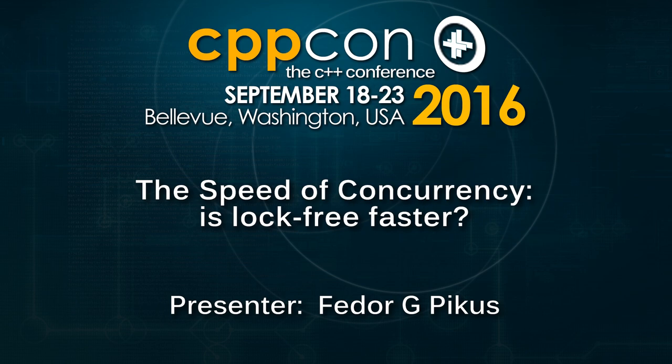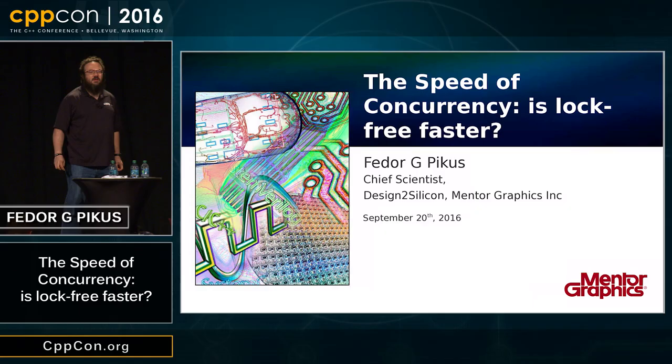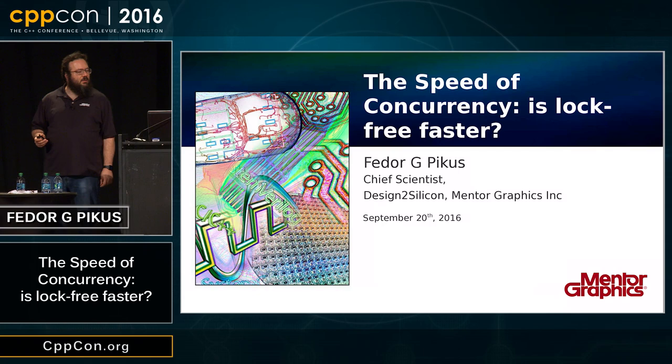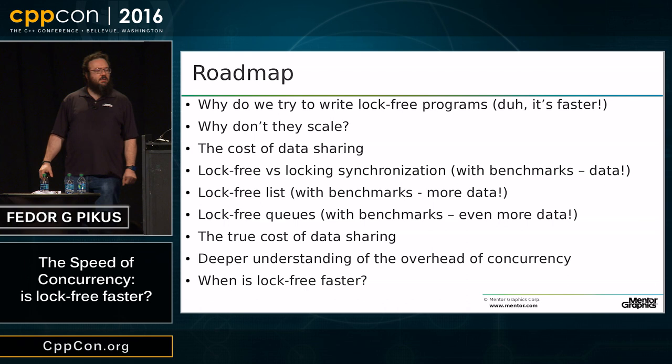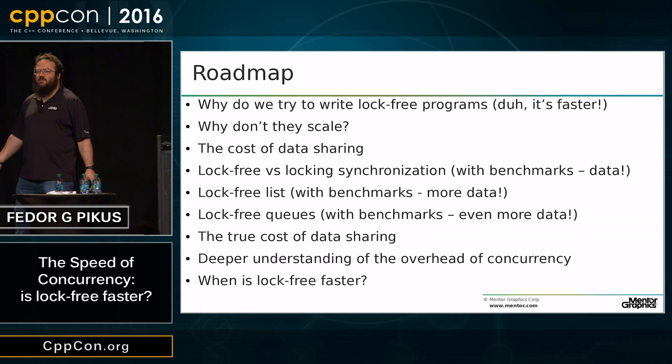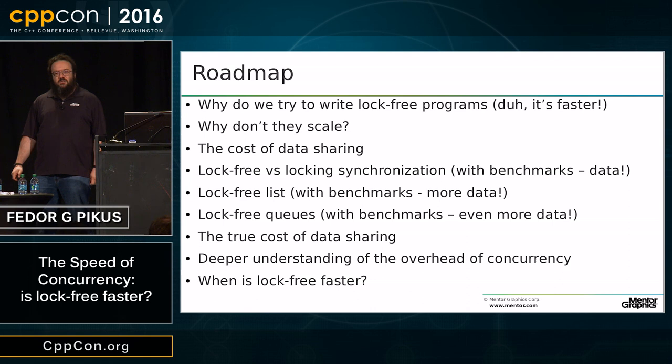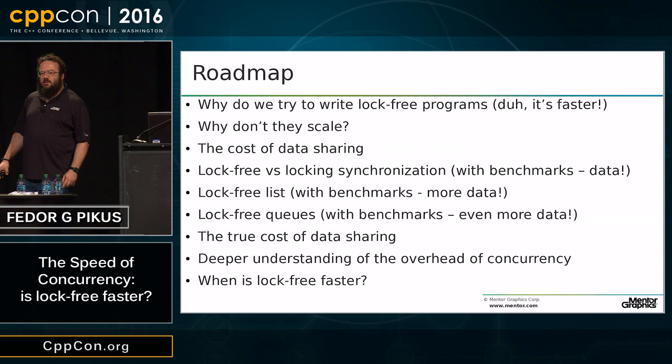Welcome to yet another talk on concurrency. Let's get started, and thank you for coming. We continue with more concurrency and more lock-free talks. We're going to talk about basically why do we write lock-free programs? Well, that's obvious because they're faster. But what do you do when they're not faster? That's the real question, and we're going to analyze the costs of data sharing and data synchronization with some examples.